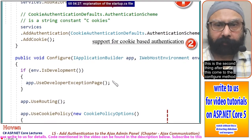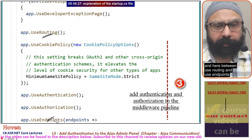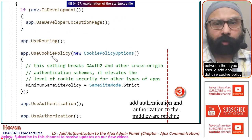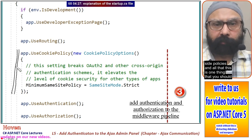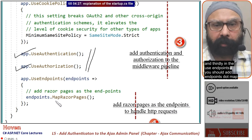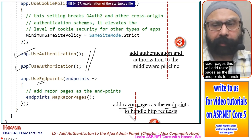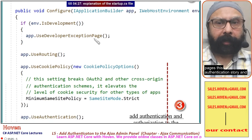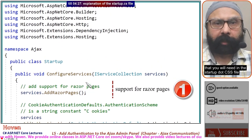In the Configure method, between UseRouting and UseEndpoints, add app.UseCookiePolicy — this handles cookie same-site policies. Then add UseAuthentication and UseAuthorization — both are required. Thirdly, in UseEndpoints add endpoints.MapRazorPages, which maps Razor Pages as endpoints to handle HTTP requests. These are the four changes needed in startup.cs: MapRazorPages, the authentication setup, cookie support, and Razor Pages support.